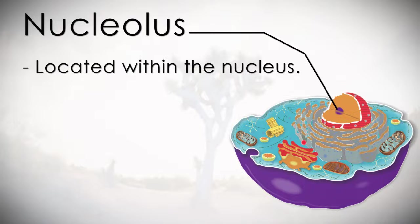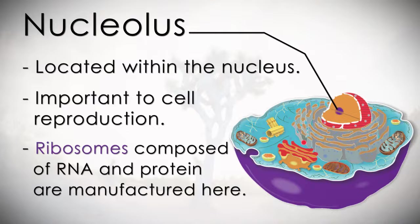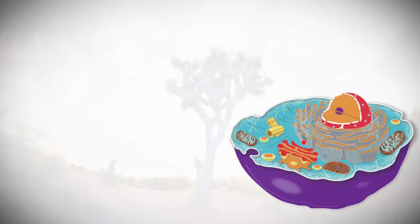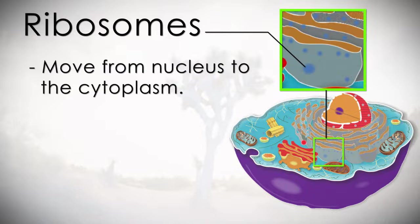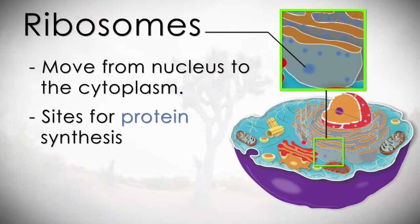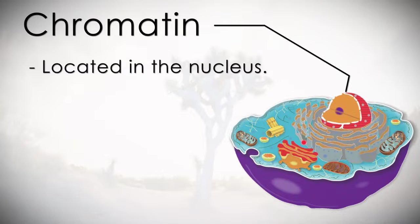The ribosomes, composed of RNA and protein, are manufactured here. Ribosomes move from the nucleus to the cytoplasm where they serve as sites for protein synthesis.